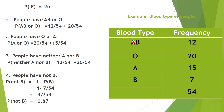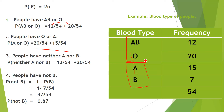If asked for people who have AB or O, consider both: 12/54 + 20/54, then simplify by adding the numerators over the same denominator. For O or A: 20/54 + 15/54. For people with neither A nor B, they have AB or O, so: 12/54 + 20/54.